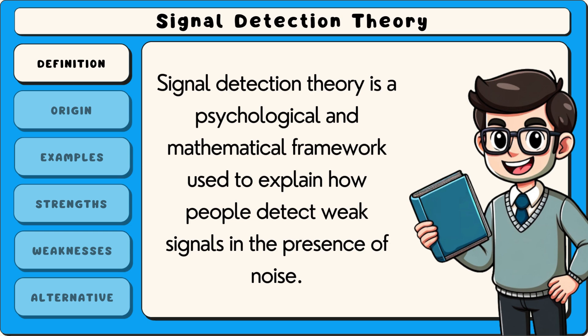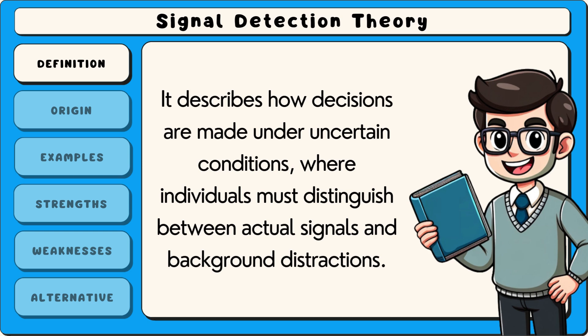Signal detection theory is a psychological and mathematical framework used to explain how people detect weak signals in the presence of noise. It describes how decisions are made under uncertain conditions where individuals must distinguish between actual signals and background distractions.